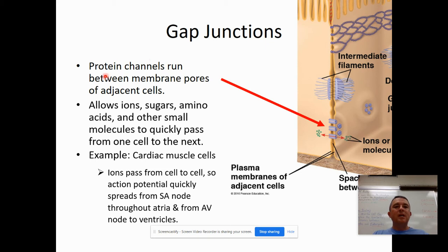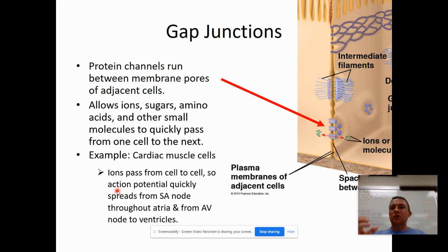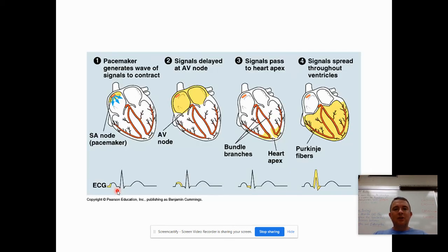Gap junctions are protein channels — like channel proteins that cross through both cell membranes. They allow ions especially, but also sugars, amino acids, and other molecules to quickly pass from one cell to the next. The best example is cardiac muscle cells, where ions need to pass very quickly from cell to cell because of what's called an action potential — an electrical signal that has to travel very quickly through the heart tissue.